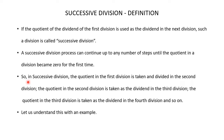So in successive division, the quotient in the first division is taken and divided in the second division. The quotient in the second division is taken as the dividend in the third division. The quotient in the third division is taken as the dividend in the fourth division, and so on. Let's understand this with an example.